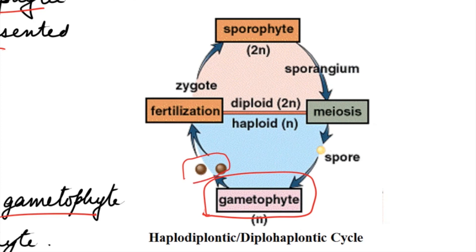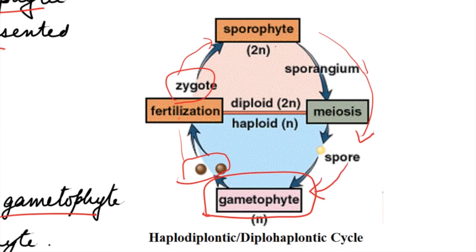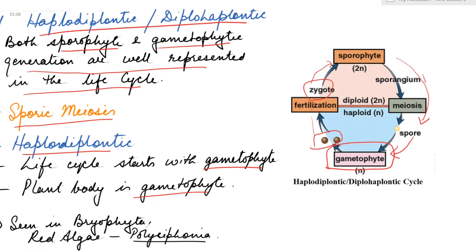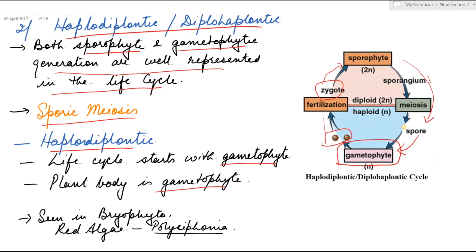The gametophyte produces gametes that undergo fertilization to form the zygote. The zygote divides to form the sporophyte. The sporophyte produces spores after meiosis, which divide to form the gametophyte. This haplodiplontic life cycle can be seen in bryophytes and in red algae like Polysiphonia.